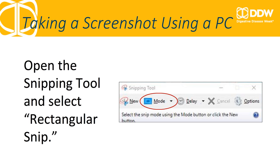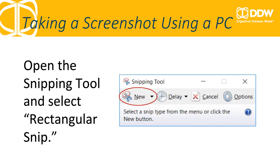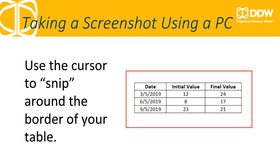After the Snipping Tool is open, you'll want to set it to take a rectangular snip. Click the Mode tab and select Rectangular Snip from the drop-down. If you are using an older version of the Snipping Tool, like the image displayed here, click the New tab and use the drop-down to select Rectangular Snip. The cursor will now turn into a crosshair mark, which you can use to outline your table.